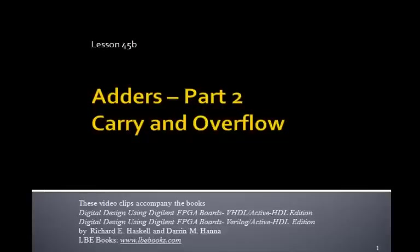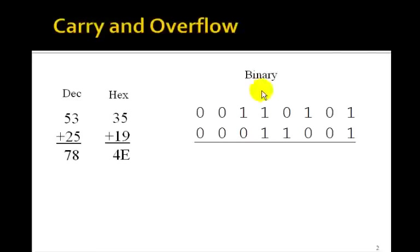In this lesson, we want to talk about the difference between carry and overflow. We'll do it by adding some 8-bit numbers. 8-bit numbers can be thought of as either unsigned numbers from 0 to 255, or as signed numbers ranging from minus 128 to plus 127. The leftmost bit is the sign bit — if it's 0, it's a positive number; if it's 1, it's a negative number, which is the two's complement of the corresponding positive number.